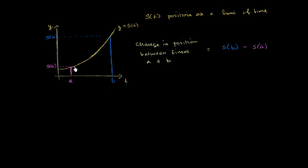Now let's think about what happens if we take the derivative of this function. The derivative gives us the slope of the tangent line at any point. For a very small change in t, how much are we changing in position? We write that as ds/dt, which is the derivative of our position function at any given time. The rate at which position changes with respect to time is equal to velocity.